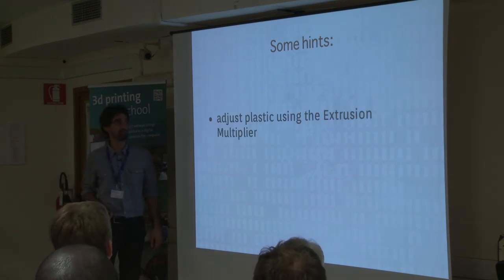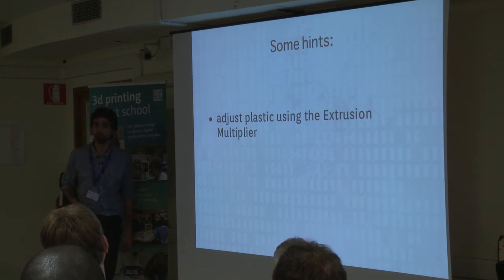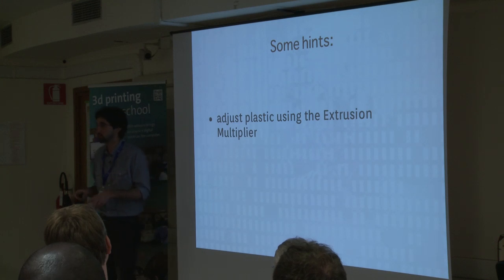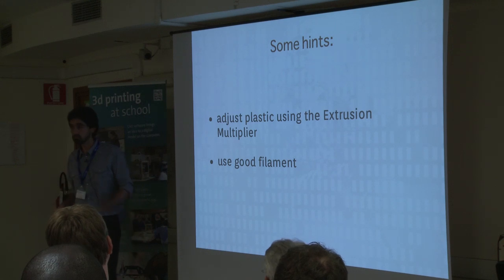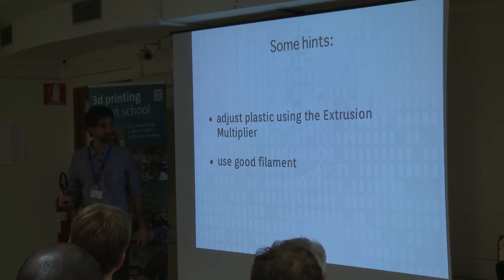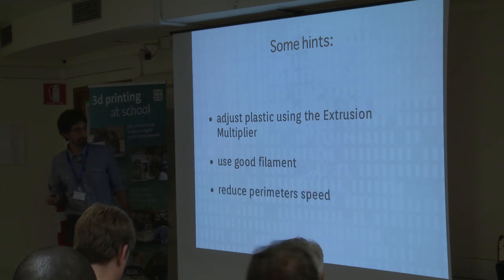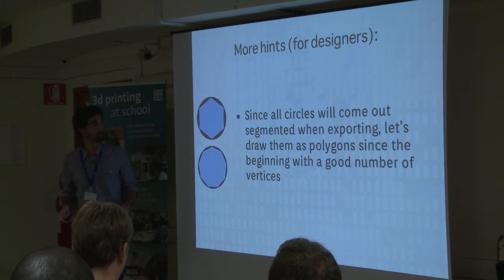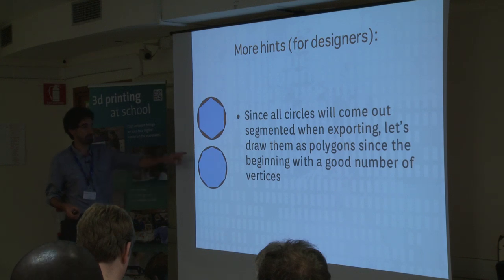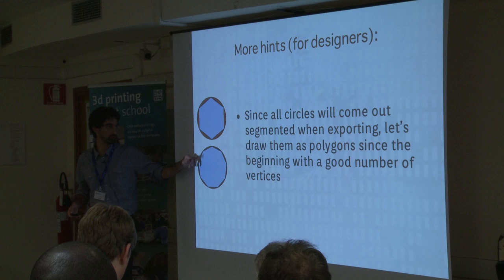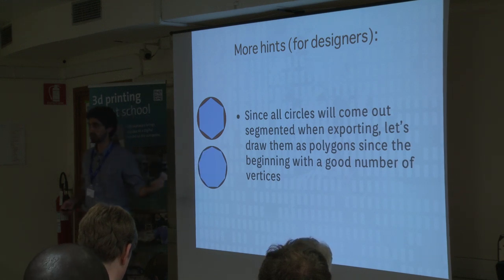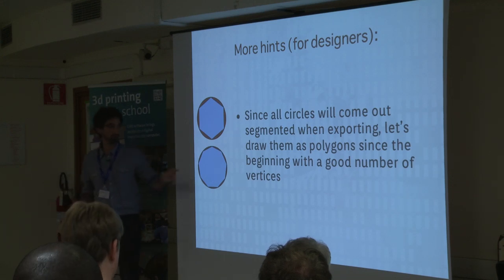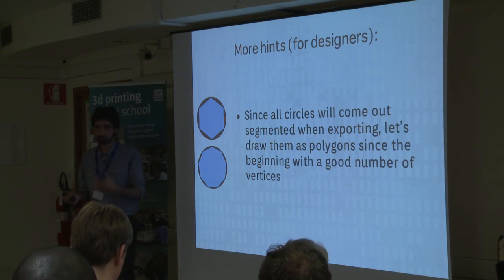Some hints: adjust plastic flow using the extrusion multiplier - reduce flow slightly to get more room for holes. Use good, stable filament - do not save money on filament for this and other reasons. Reduce perimeter speed, which reduces shrinkage problems. For design, keep in mind the problem of circles being made of polygons and compensate. OpenSCAD has a popular module called Polyhole which helps you make correct holes by calculating polygon area equivalence to get the intended resulting diameter.